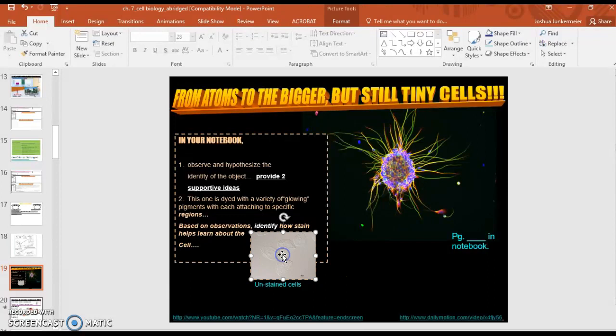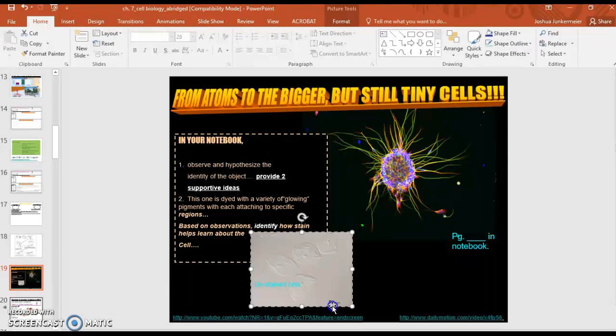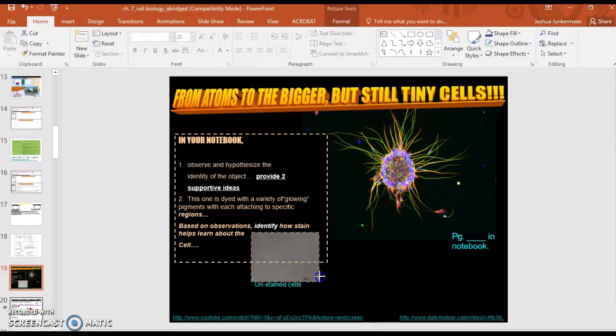This is what a cell looks like when it's not been stained. And you can see that it's rather transparent. So the difference between this and this is quite clear. So compare these and think what would be beneficial by staining it like you see here. And then that can be your answer for number two of why they stain it.